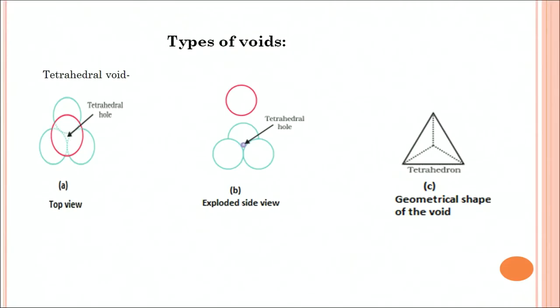I want to show you in a clear view over there. That's the tetrahedral void you can see when we are putting in the groove. This is what I showed you. Tetrahedral hole you will find and that is the tetrahedral geometrical shape of the void.